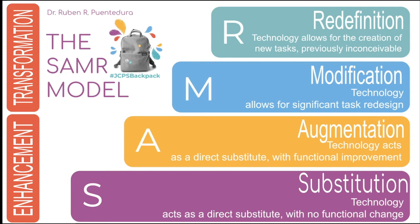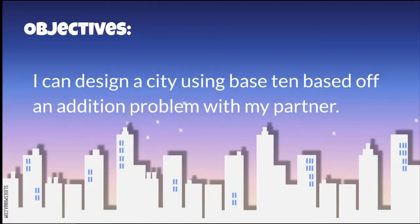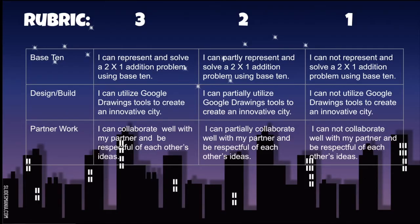In the SAMR model, we want to live in that transformation portion — modification and redefinition. This lesson falls right at modification, where we're taking something usually done hands-on in a classroom and transforming it into something students were doing together digitally. Our objective was to design a city using base 10 based off an addition problem with a partner. The rubric we showed them focused on base 10 use, how they designed and built, whether they made a creative and innovative city, and whether they were collaborating with their partner properly and being respectful.